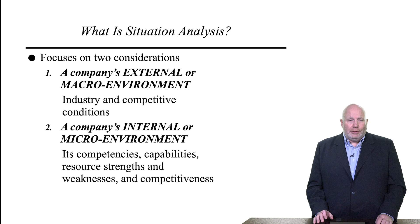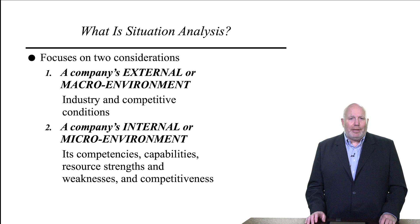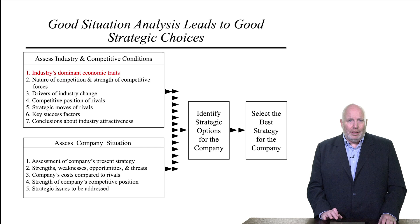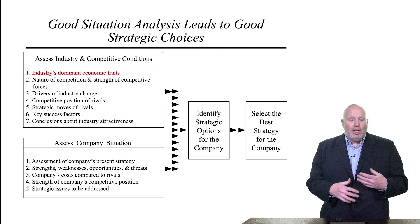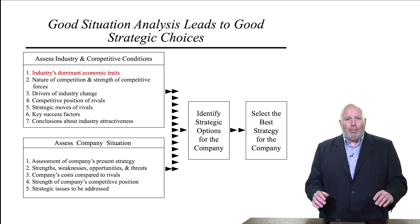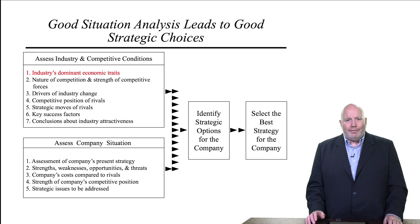As we think about situation analysis, the industry analysis really looks at the external or macroeconomic environment — the industry and competitive conditions. The company's internal or microeconomic environment includes things related to its competencies, capabilities, resource strengths and weaknesses, and competitiveness. In this lecture and the upcoming lectures, we're going to be looking at the economic traits as part of industry analysis. Once we complete those seven steps, we'll look at the internal analysis of the firm. Those two things together — the industry analysis and the firm analysis — will help us identify strategic options and select the best strategy. A good situation analysis is going to help us lead to making good strategy choices for a firm.